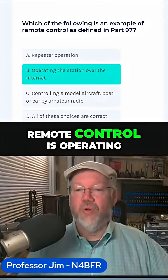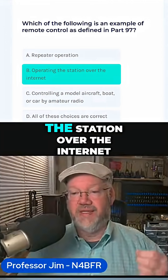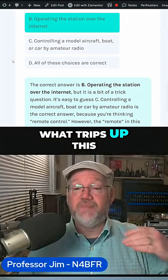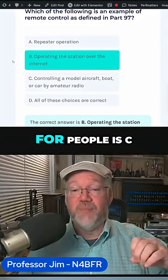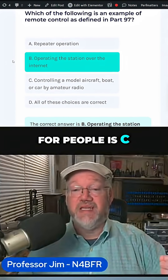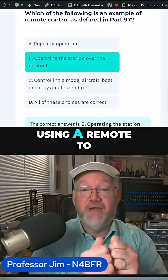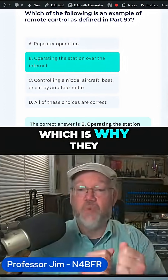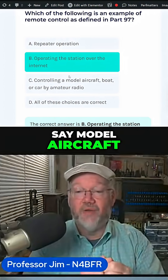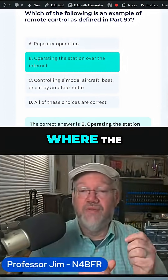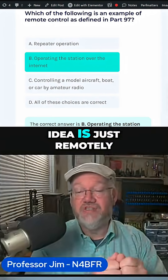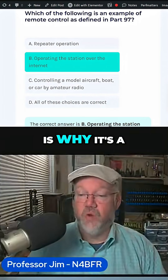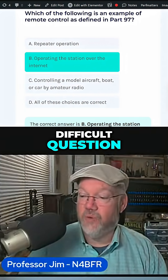So remote control is operating the station over the internet. What trips up this question the most, I think, for people is C, because they think about using a remote to control something, which is why they say model aircraft — where the idea is just remotely operating the station is why it's a difficult question.